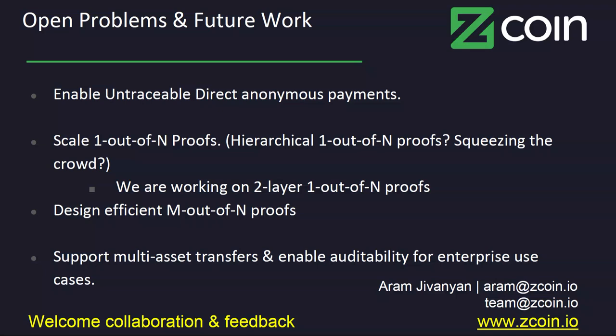So just as a conclusion, this is a new protocol, and there is a lot that can be done to improve it further. Of course, we would love to see an alternative approach for direct anonymous payments, which results to untraceable coins. But the research problem which takes me busy this moment full time is how to scale one out of n proofs. I believe it's possible, and now we have some progress on building two layers, one out of n proofs, which promise to significantly reduce the proof time. And also, I think it's possible to design more efficient M out of N schemes. If you can design efficient M out of N schemes, this will optimize transaction size with multiple inputs. And also, it will be interesting to see how we can support multi-asset transfer or also enable auditability of transactions for enterprise use cases. Thank you. Happy to answer questions.